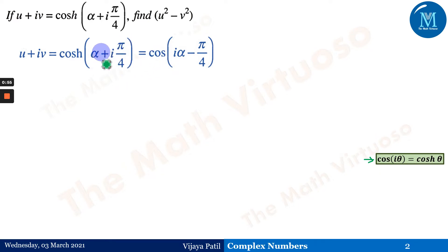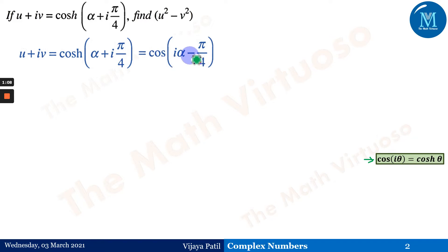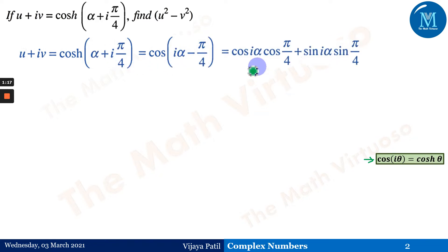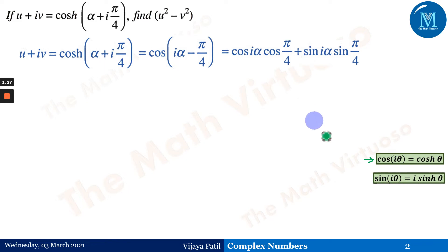So cosh(α + i·π/4) can be written as cos of a particular angle: cos(iα - π/4), since i·i = -1. This gives i·α - π/4. Using the cos(a - b) expansion: cos a·cos b + sin a·sin b.